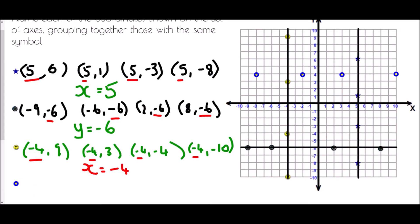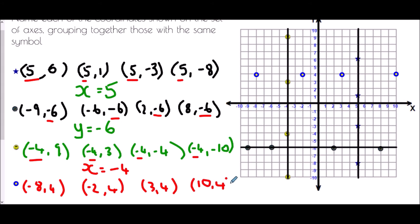Finally, the target shapes. The coordinates are: (-8, 4), (-2, 4), and (10, 4). The y coordinate is always four, so we call that line y equals four. Drawing a line through all those points, it goes through the value four on the y-axis. This is how we name horizontal or vertical straight lines — it's about which axis the line crosses and at what value.